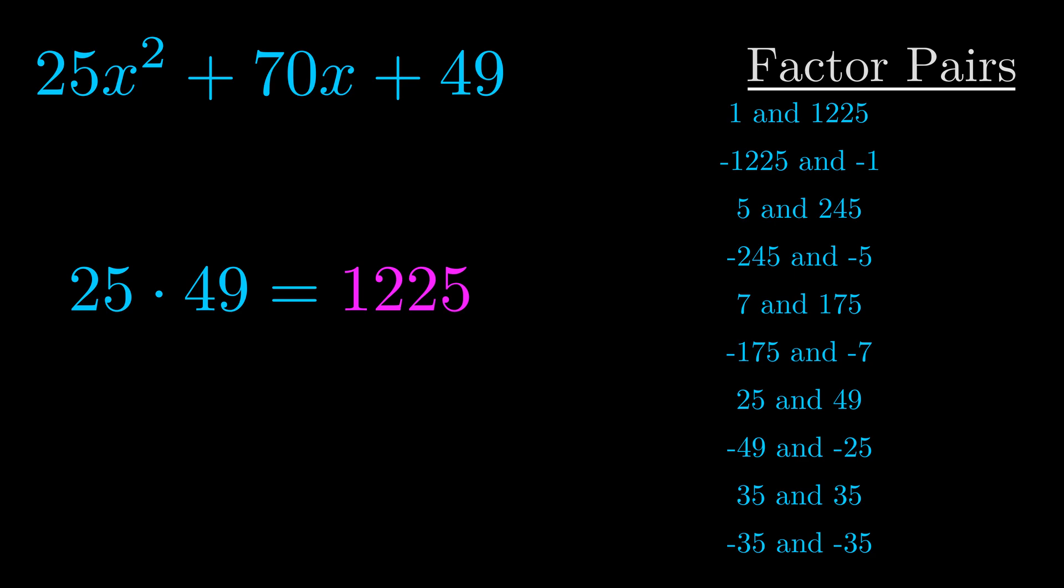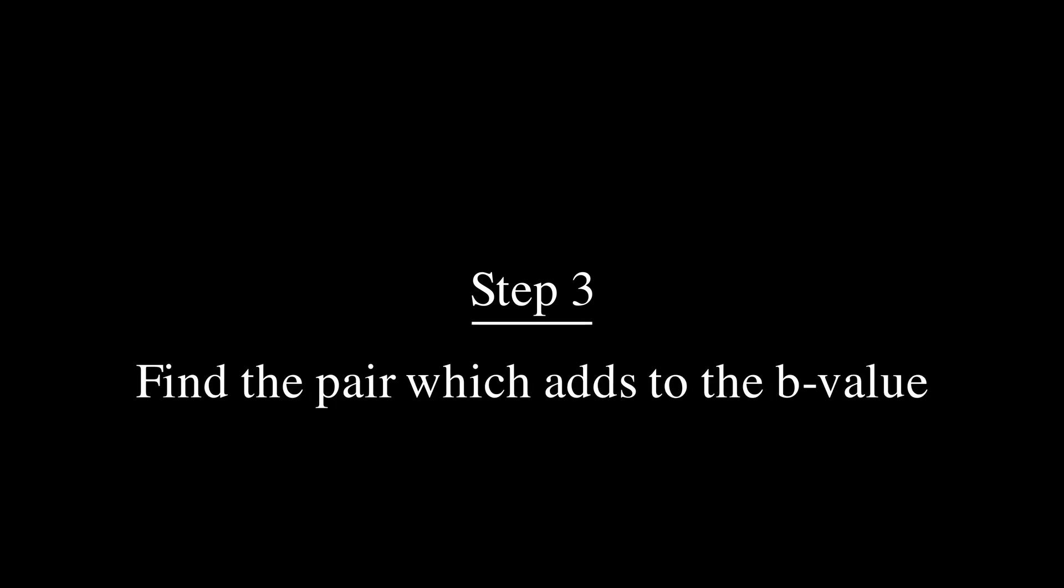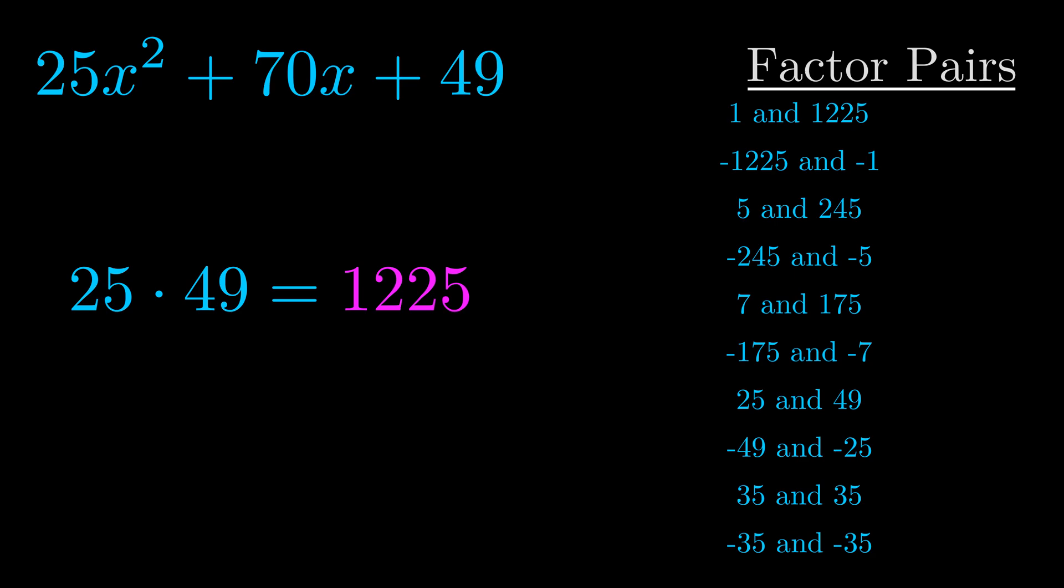Now once you have these factor pairs, the goal is to find which of these pairs adds to the b value. The b value is the coefficient on the x term. That's the middle term, the one that we haven't done anything with yet.